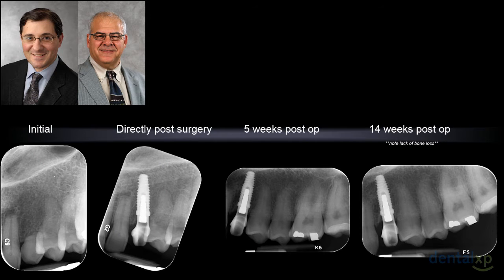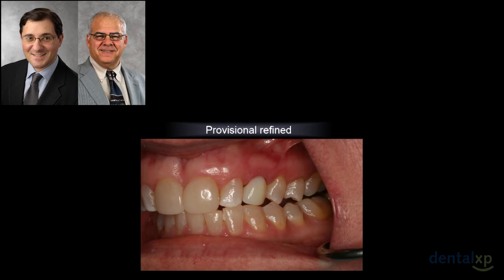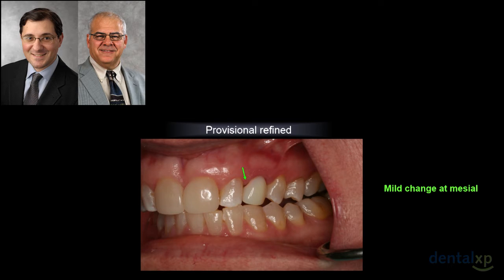We're going to transition now to the final restoration. The question is: have we reached a point where all this digital technology saves us time? Would we have been better off doing the provisional as a screw-retained, creating our soft tissue form, taking a platform-level impression, and making a final restoration? At 14 weeks, when the restorative dentist modified the provisional, there's a slight change in the soft tissue profile on the mesial aspect. The question is whether the CAD-CAM-generated abutment is sufficient to maintain soft tissue profiles — the so-called one abutment, one-time concept.